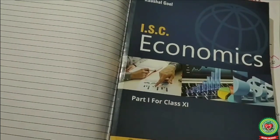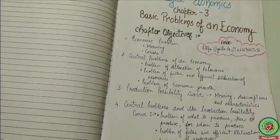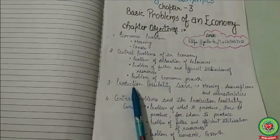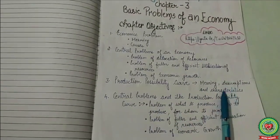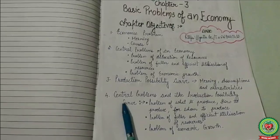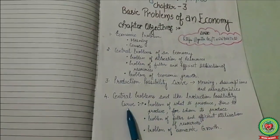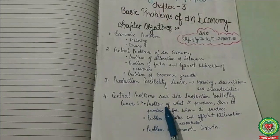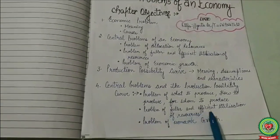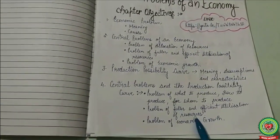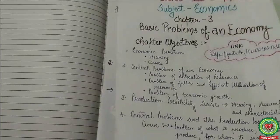Hello students, hope you are well and working hard to achieve your goals. Today we will start our next topic: the Production Possibility Curve — its meaning, assumptions, and characteristics. Then we will discuss central problems and the PPC, which include the problem of what to produce, how to produce, for whom to produce, the problem of fuller and efficient utilization of resources, and the problem of economic growth.